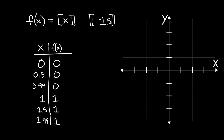Now let's plot these points. We have (0,0), (0.5,0), and (0.99,0) — all sitting along y=0. At x=1 we draw an open circle and jump up to (1,1) with a closed circle. So we get a flat step from 0 to just before 1, then a jump up. Points like 1.5 and 1.99 stay at y=1, and then there's another open circle before the next jump up to y=2.